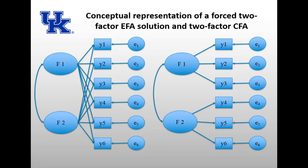Here's a visual of what a forced two-factor EFA and a two-factor CFA model look like. On your left you see an EFA model, showing the difference in locality between the two. For the EFA, both factors are affecting all the indicators. Whereas for the CFA, one factor affects certain indicators and the other factor affects the other indicators — certain indicators load on certain factors.